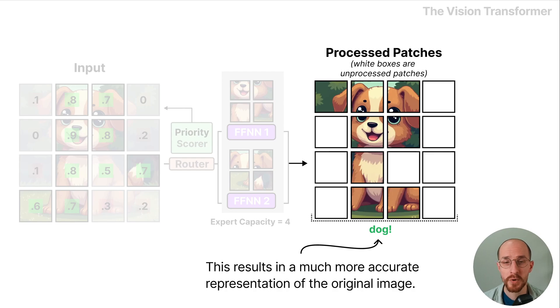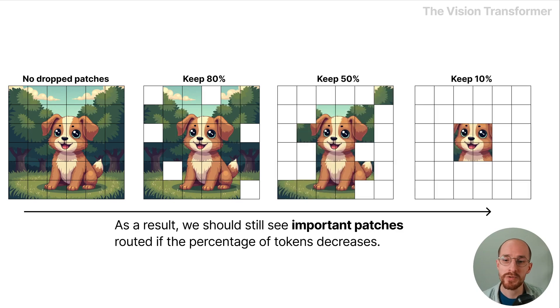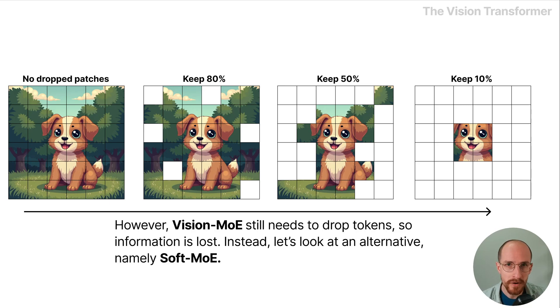This results in a much more accurate representation of the original image. As a result we should still see important patches routed if the percentage of tokens decreases. However, vision MoE still needs to drop tokens so information is lost.